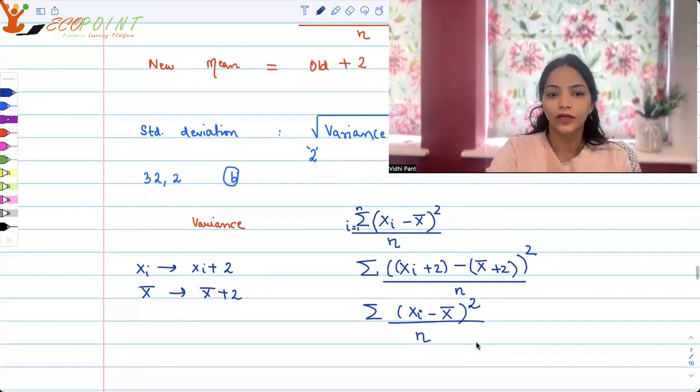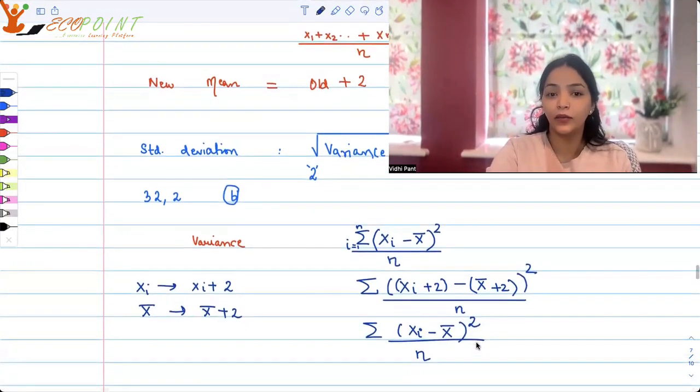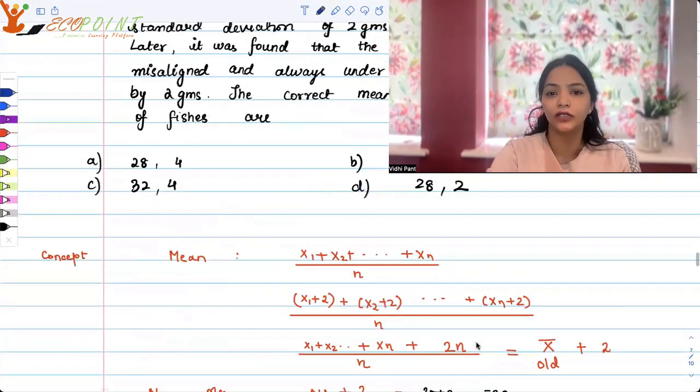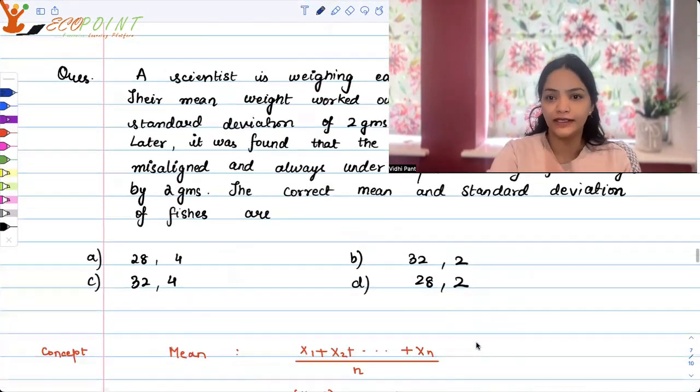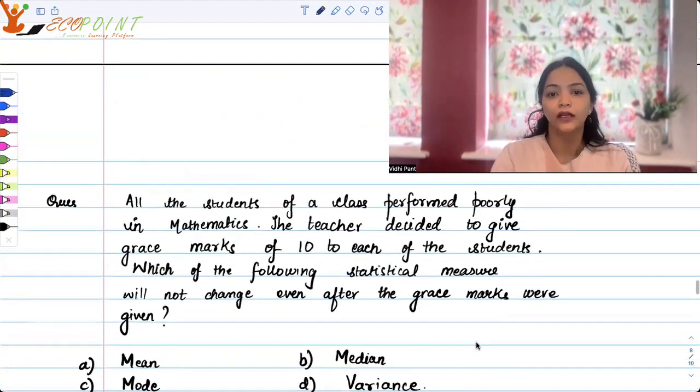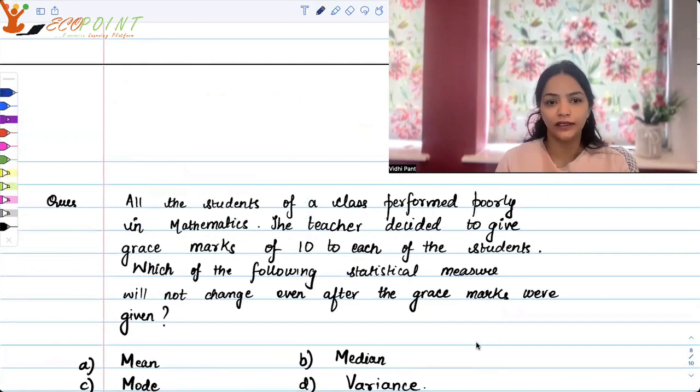So this is the reason why the standard deviation will not change. Variance will not change. The standard deviation will not change. B is the correct option. With this I will also take up another question which is based on the similar thing.